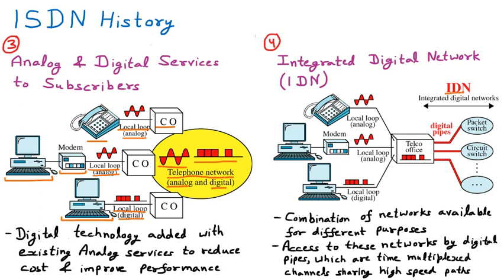Looking at the IDN diagram: the telecom office or telephone exchange connects to digital pipes beyond it. One pipe works with the packet switch network — sending data in small packets. Another is the circuit switch — like a telephone call where a connection is first established before communication. There can be other options too. These digital pipes serve the customer as per requirement: for a phone call, the circuit switch path is used; for sending data, packet switch is used.